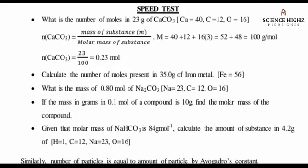Now we want to see how we can solve some questions. The first question: what is the number of moles in 23 grams of CaCO3? They have given us the relative atomic masses in brackets, so we can use that to calculate the molar mass and then use it to solve the question.